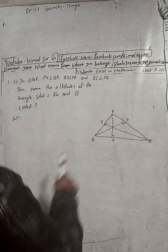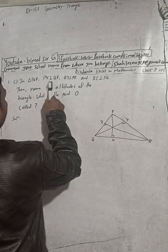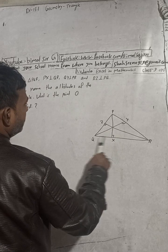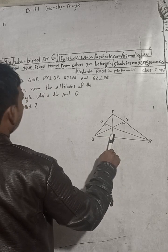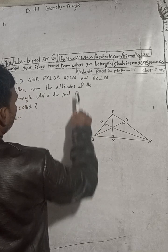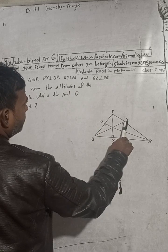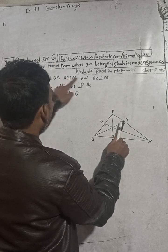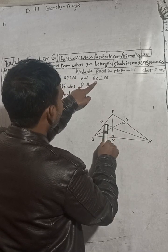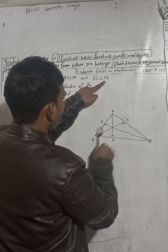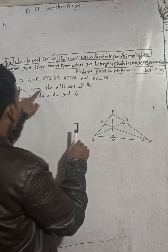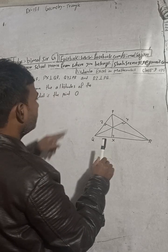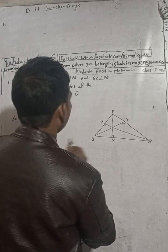In triangle PQR, PX is perpendicular to QR — that means 90 degrees. QY is perpendicular to PR — that means 90 degrees. And RZ is perpendicular to PQ — that is also 90 degrees. Now, name the altitudes of the triangle.